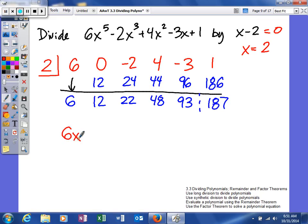6 is the coefficient of x^4, then plus 12x^3, plus 22x^2, plus 48x, plus 93.